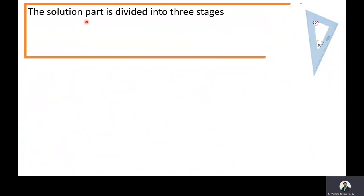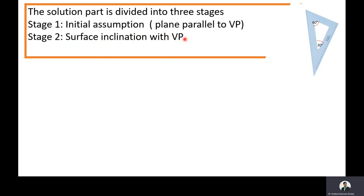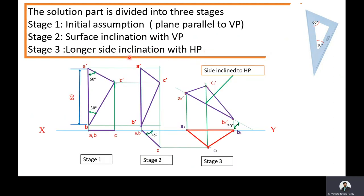The solution is divided into three stages. Stage 1: initial assumption — plane parallel to VP. Stage 2: surface inclination with VP. Stage 3: longer side inclination with HP. This is the first stage solution, this is the second stage solution, and this is the third stage solution.